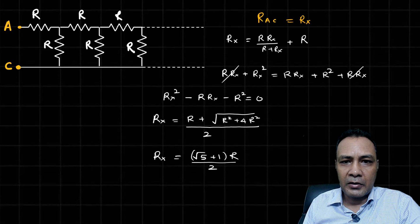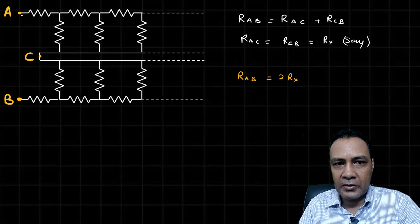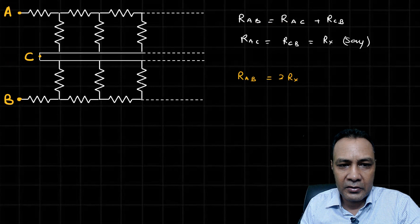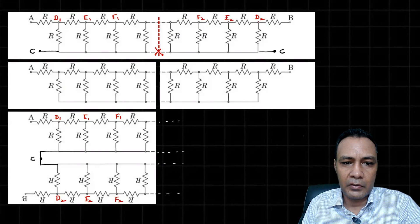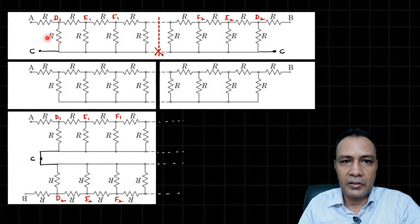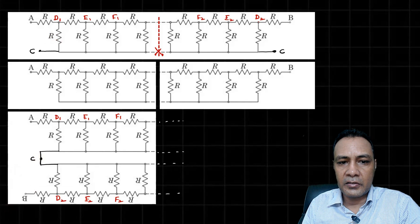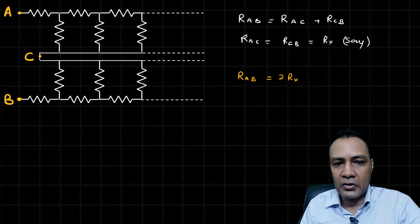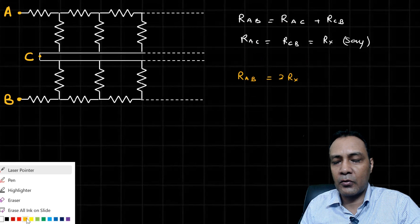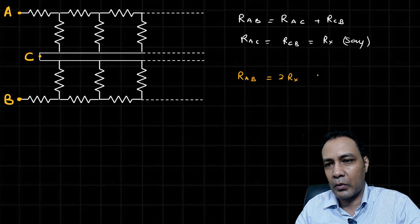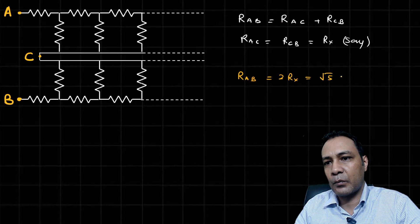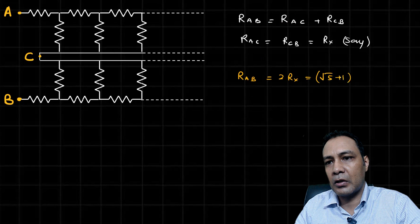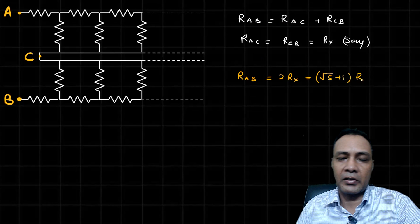I had claimed that this ladder is equivalent to the original ladder, and this resistance R_AB is equal to twice R_X. R_X I just obtained is root 5 plus 1 by 2 times R, so that will be simply root 5 plus 1 times R. And that is the final answer. Thank you.